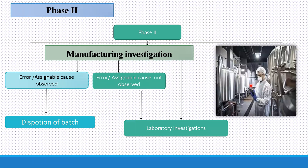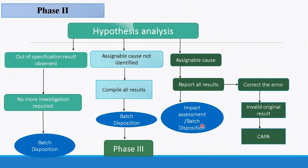Phase 2 is the manufacturing investigation. In this phase, we find out errors during manufacturing. If an error or assignable cause is observed, disposition of the batch occurs. If no error or assignable cause is observed, the root cause is investigated. Laboratory investigations can be done by hypothesis analysis. Laboratory investigation should be carried out until the root cause is identified, and all activities should be protocol-based for root cause analysis. Hypothesis analysis is not related to batch release or rejection — it is only used to find out the root cause of the OOS.